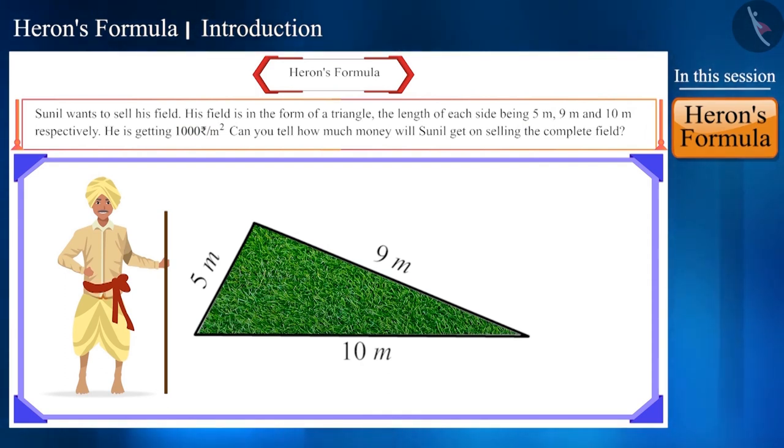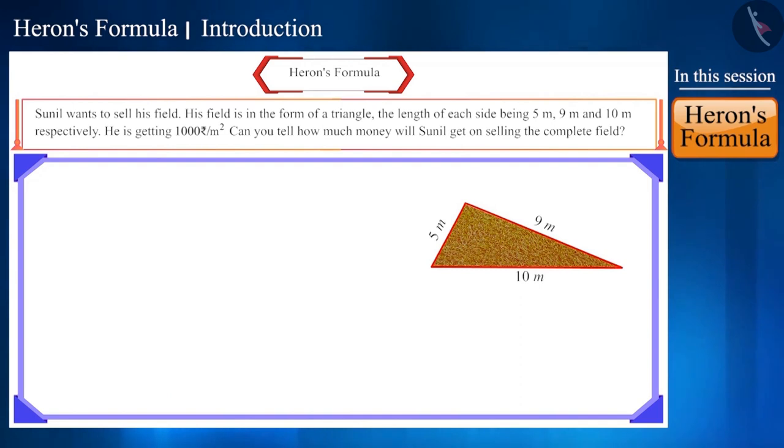Let's try to help Sunil by finding the answer to the question. If we name this triangular field as ABC and assume that the length of the sides AB, BC and CA of this triangle is 5 meter, 9 meter and 10 meters respectively,